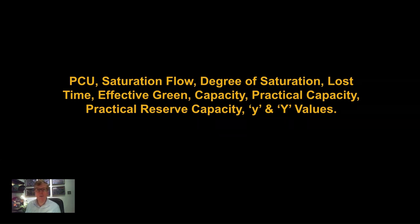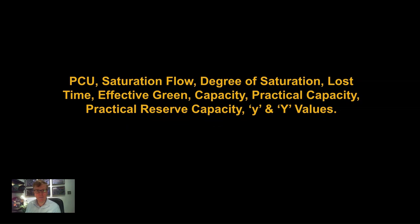The terms we have covered in this episode are: PCU, saturation flow, degree of saturation, lost time, effective green, capacity, practical capacity, practical reserve capacity, and the large and small Y values. Although there have been a lot of numbers, these steps are essential to designing an efficient traffic signal installation. Much of this is usually produced by modelling packages such as Linsig, but it is essential that designers understand these elements from first principles to achieve optimal results.